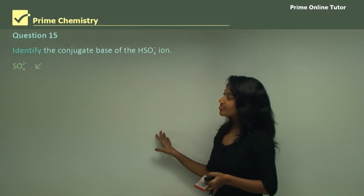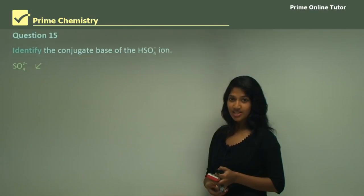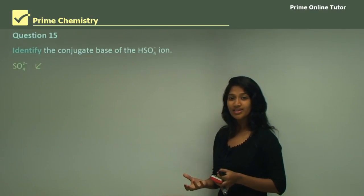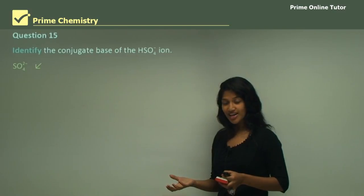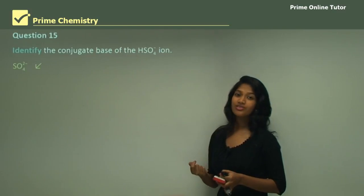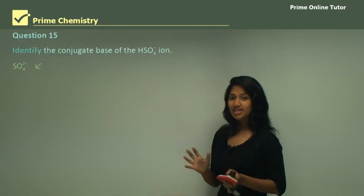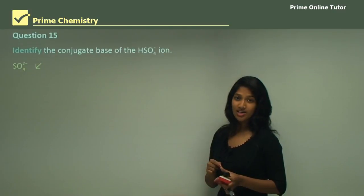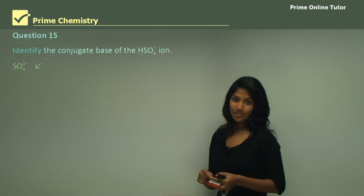That brings us to the end of the lesson. In this lesson we learned about amphiprotism — when a substance acts as both a proton donor and a proton acceptor — and we considered examples like water and dihydrogen phosphate.